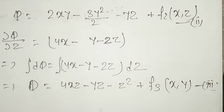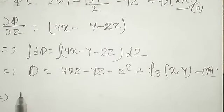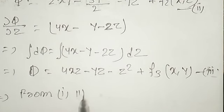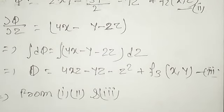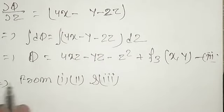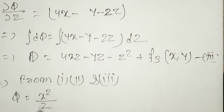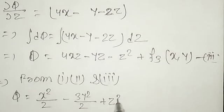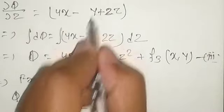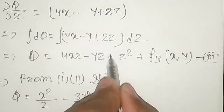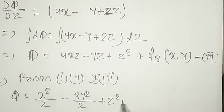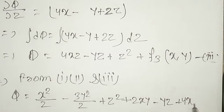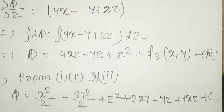From equations 1, 2, and 3, combining all terms, the scalar potential function is: φ = x²/2 − 3y²/2 − z² + 2xy − yz + 4xz + C. This is the required solution for the given problem. Thank you.